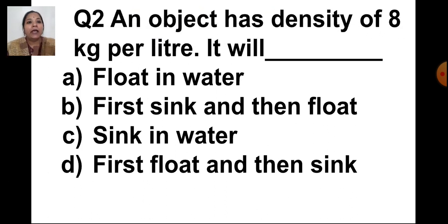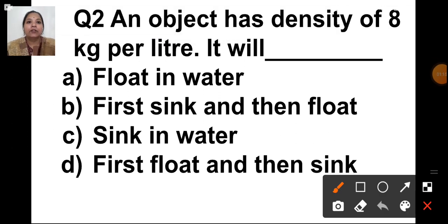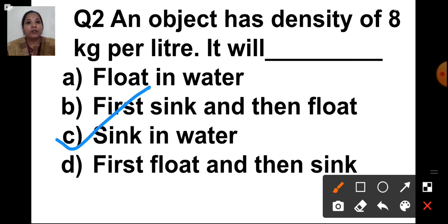The next question is: an object has a density of 8 kg per liter. It will — options are: float in water, first sink and then float, sink in water, first float and then sink. The object will sink in water because the density of the object is more than the density of water. Objects more dense than water sink, and objects with less density than water float. The density of water is 1 kg per liter.